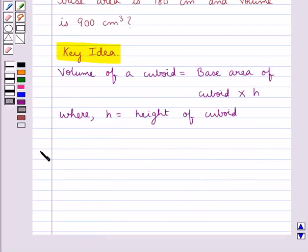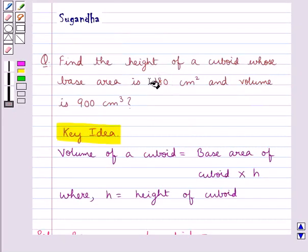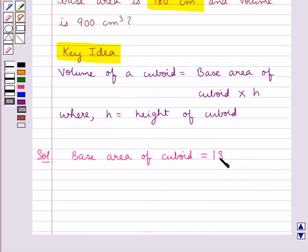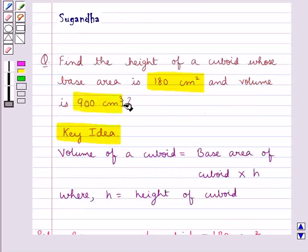Now let's move on to the solution. The base area of cuboid is given to be 180 cm² and the volume of cuboid is equal to 900 cm³.